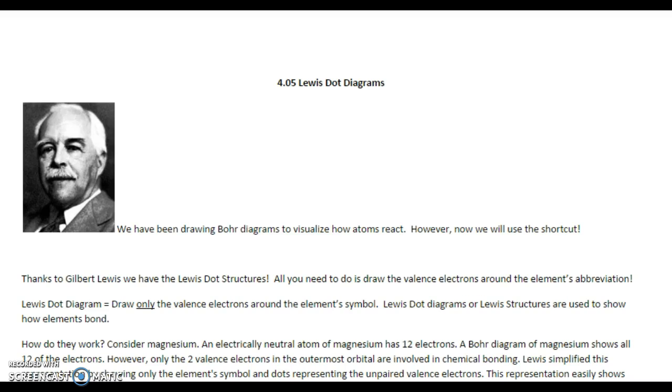Lewis dot diagrams draw only the valence electrons around the element's symbol. Lewis dot diagrams or Lewis structures are used to show how elements bond. Some books call it a Lewis structure, some call it a Lewis dot diagram. It means the same thing.